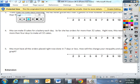Number four: Rita can make eight cakes for a bakery each day. So far, she has orders for more than 32 cakes. Right now, Rita needs more than four days to make all 32 cakes. The students really need to do three things. They need a variable, a sign, and a number in order to correctly write an inequality.